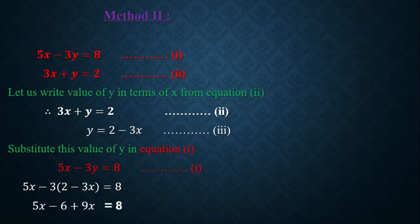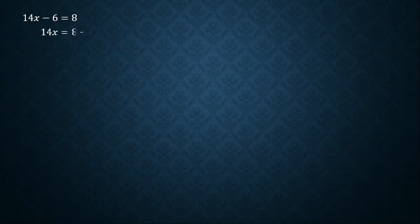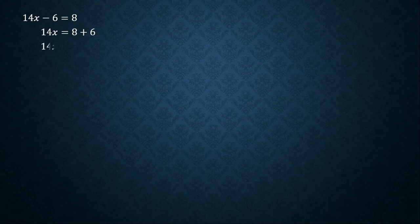Expanding the bracket: 5x − 6 + 9x = 8. Adding like terms: 14x − 6 = 8. Moving the constant: 14x = 8 + 6 = 14, so x = 14/14 = 1. The value of x is 1, consistent with Method 1.